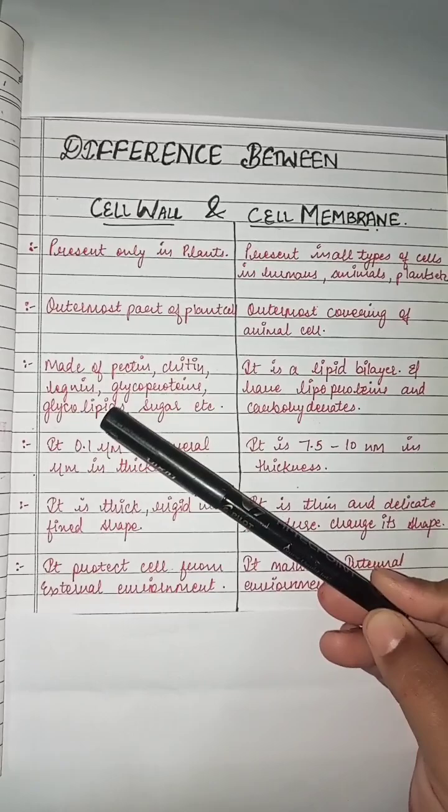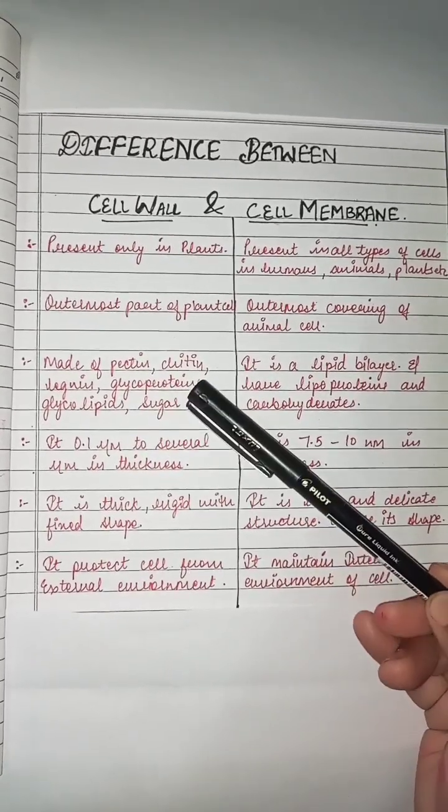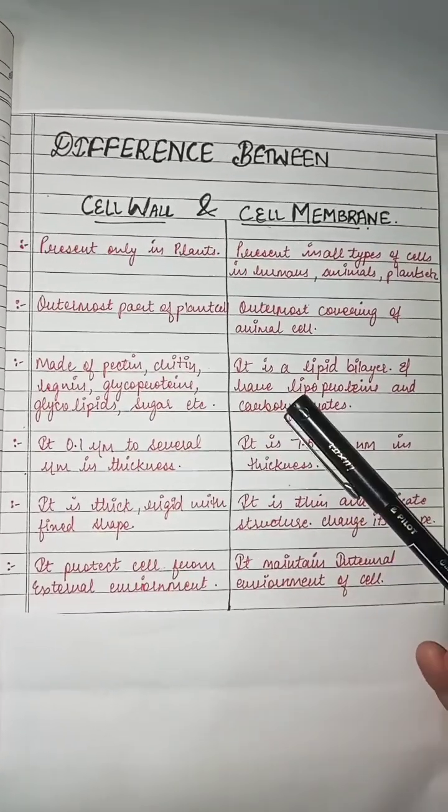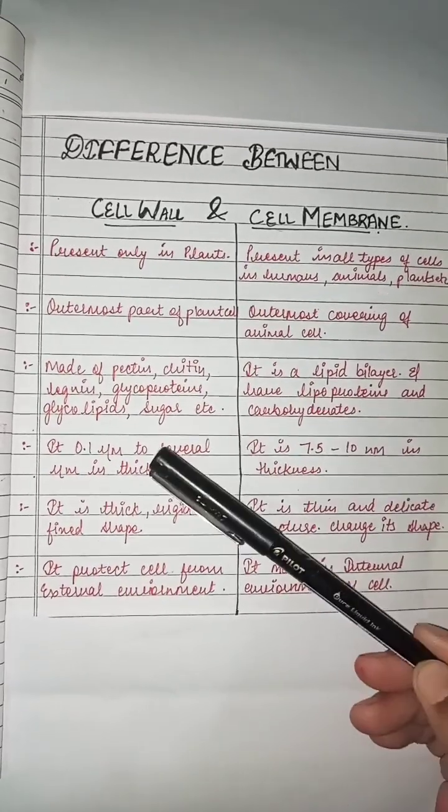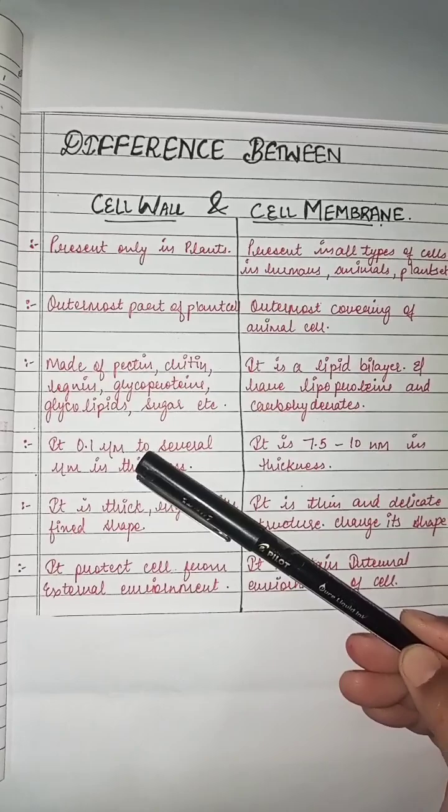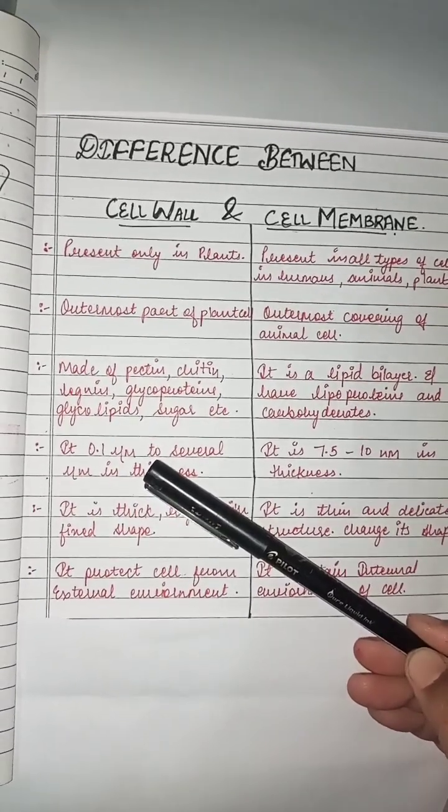The cell wall is made up of pectin, chitin, lignin, glycoproteins, sugar, etc., whereas the membrane is made up of bilipid layer. The cell wall is 0.1 micrometer to...